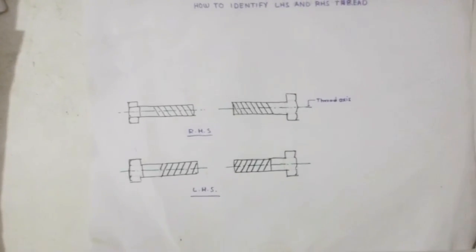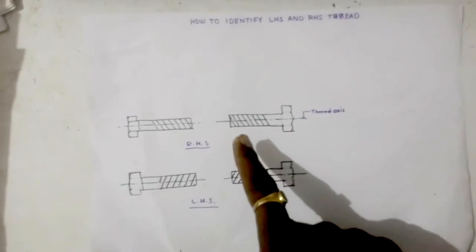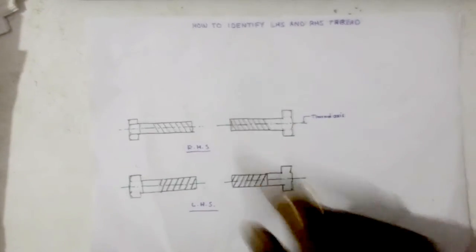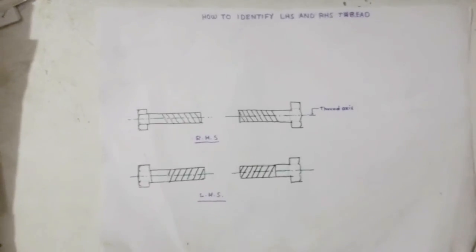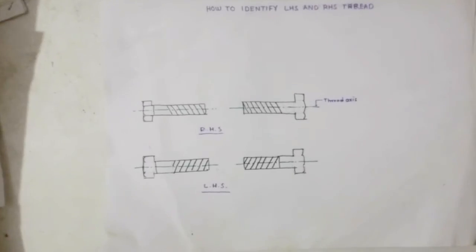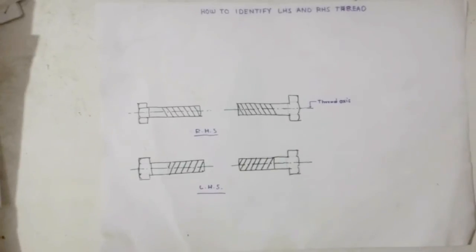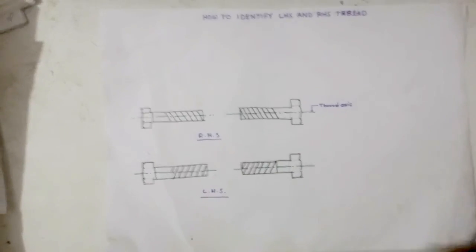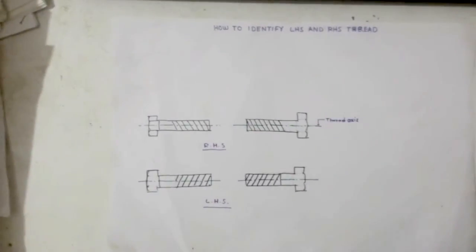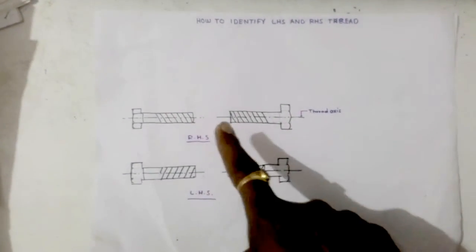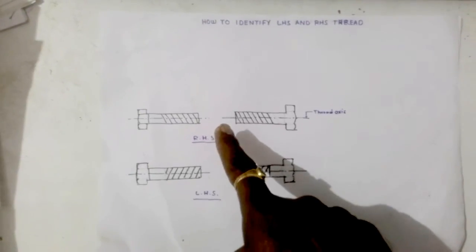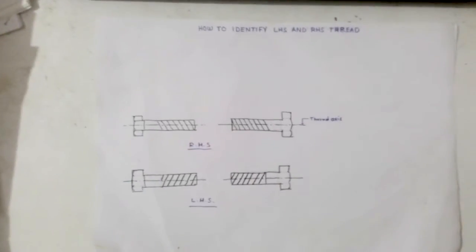To identify the thread hand, you have to first lay down the screw or bolt such that the axis of the screw will be horizontal, as shown in the diagram. This trick is applicable even if the screw is oriented the other way around. The key condition is that the screw thread axis must be horizontal in front of you.